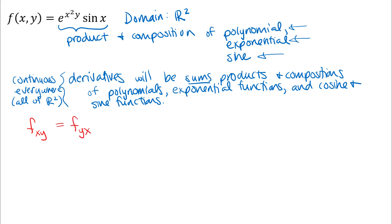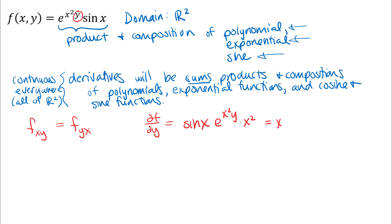Looking at the function, x occurs in a couple of different places, but y only occurs once. So the easiest path is to differentiate first with respect to y. The sine function is treated like a constant and comes along, times the derivative of the exponential function, and then by chain rule, times the derivative of what's inside the exponential. That gives us the first partial derivative with respect to y.